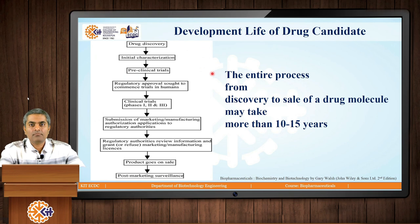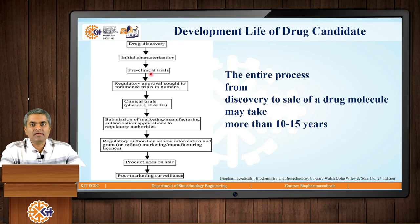We are going to see the development life cycle of a drug candidate. Whenever a new drug is to be researched, it goes through many steps from its discovery to its sale in the market. The first step is drug discovery, the second is initial characterization of the molecule, and after that the drug will be tested in preclinical trials on animals. If the regulatory authority approves the results, then it will proceed to clinical trials on humans.